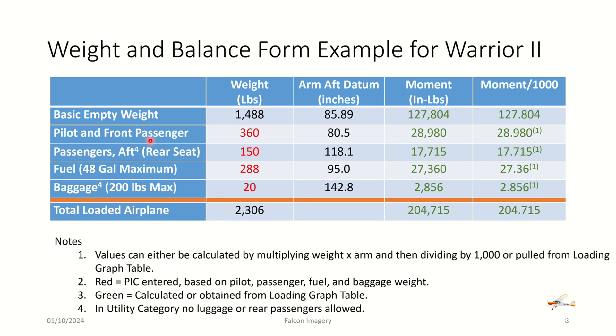So here's a simple table showing a basic form for doing weight and balance. As you can see across the top, we have the weight, the arm, which is the distance away from the datum, the moment, which is the multiplication of the weight and the arm distance, and then the moment divided by 1,000 here. Some operating handbooks will provide tables and charts that are based on a moment divided by 1,000. So we just took the moment in pounds and then divided by 1,000 to make the math a little bit easier.